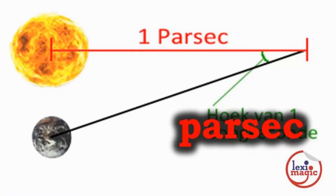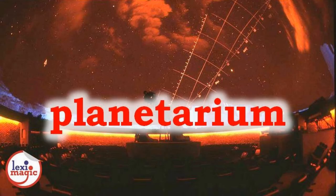Parsec is an astronomical unit to measure distance which equals 3.26 light years. Planetarium is a domed building in which informative videos and presentations about astronomical phenomena are displayed.